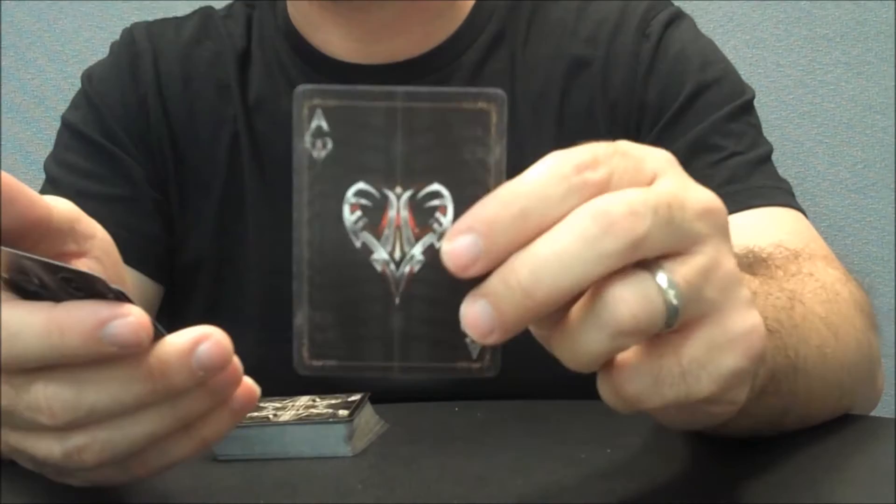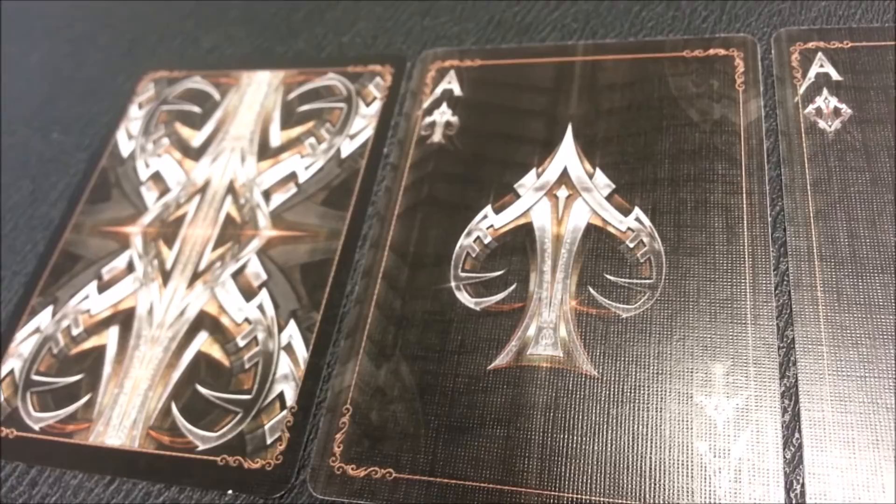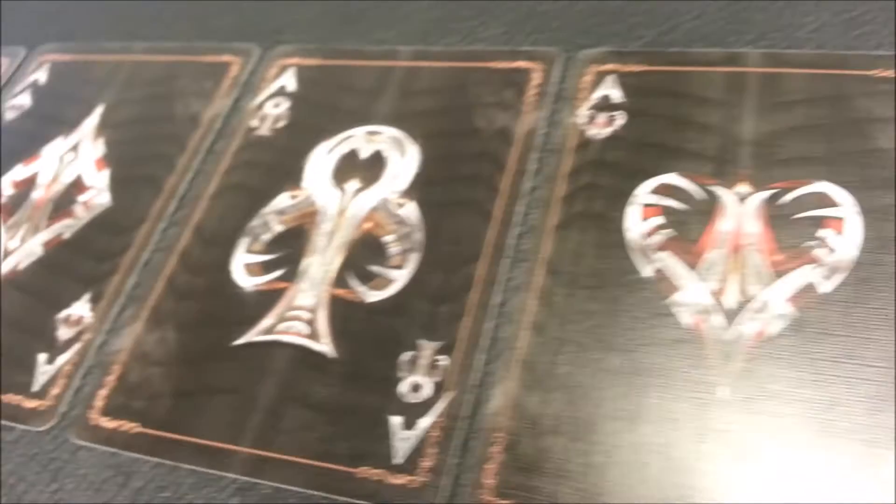I'll show you the four aces—they have a good depiction of what the pips look like. There's the spade and the heart. Notice the red accent on red cards and the gold accent on black cards. Here's the diamonds. So here's a closer look at all four aces: Spades, Diamonds, Clubs, and Hearts.